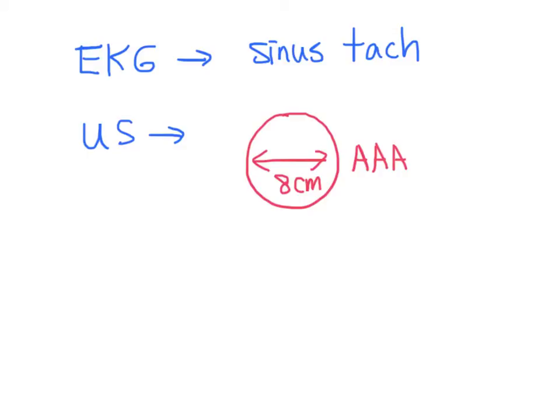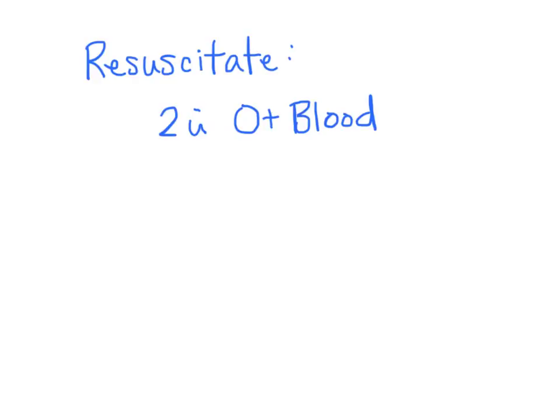You decided that the patient had a ruptured abdominal aortic aneurysm. You call the vascular surgery team STAT. As you're preparing the patient for the operating room, you continue your resuscitation by asking for two units of O positive blood and typing and crossing the patient for another six units.